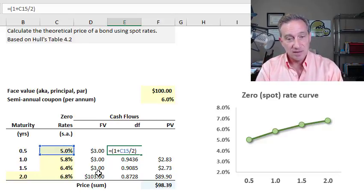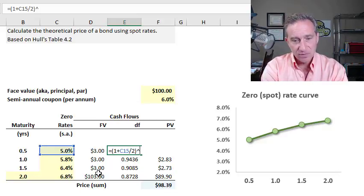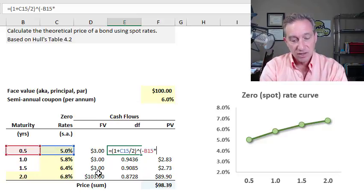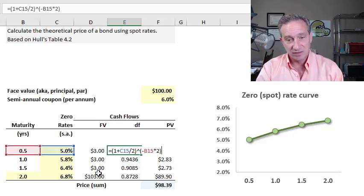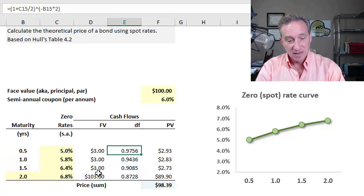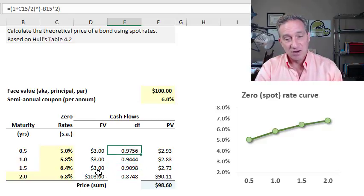I'm going to assume with semi-annual compounding to match the timing of the cash flows. And then I would raise this to the power of negative the maturity multiplied by two to be consistent. I divide the rate by two, so I multiply the maturity by two to acknowledge that we're compounding semi-annually or twice per year, and I get a slightly different discount factor. I ripple that down, and now my discount function reflects the assumption of semi-annual compounding.